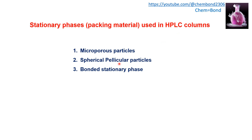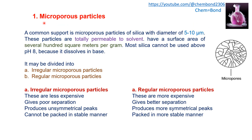Stationary phase or packing materials used in HPLC columns include microporous particles, spherical pellicular particles, and bonded stationary phases. The most common support is microporous particles of silica with a diameter of 5 to 10 micrometers. These particles are totally permeable to solvents and have a surface area of several hundred square meters per gram. Silica cannot be used above pH 8 because it dissolves in base — this is a drawback of silica microporous particles, though they remain the most commonly used packing material in HPLC.